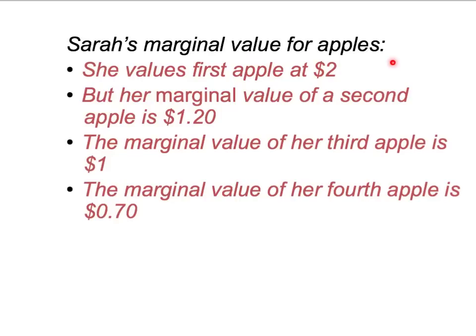Her marginal value of the first apple she receives is $2. The marginal value of the second apple, given she's already got a first apple, is $1.20. The marginal value of her third apple, given she's already got two apples, is $1. And the marginal value of her fourth apple, given she's already got three apples, is $0.70.